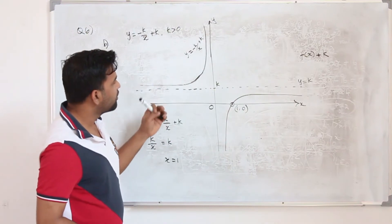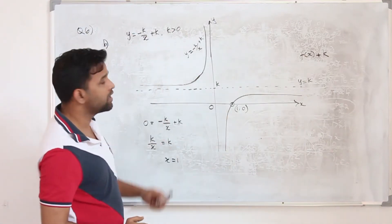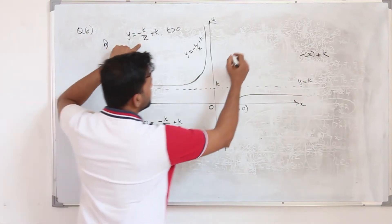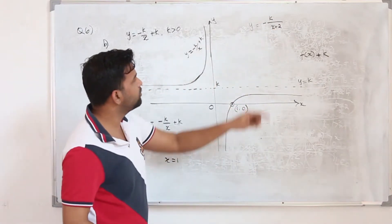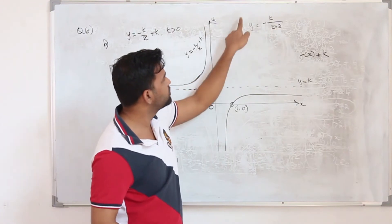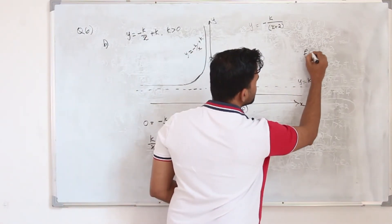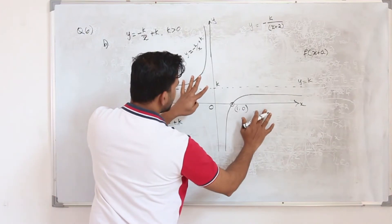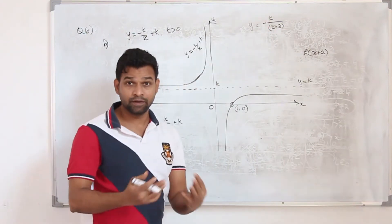If the graph is shifted left or right, when the graph crosses the y-axis you replace x by 0 to find the y-coordinate. For example, if they want you to sketch y equals minus k upon x plus 2, replacing x by x plus 2 shifts the graph left 2 units, and substituting x equals 0 gives the y-coordinate in terms of k.